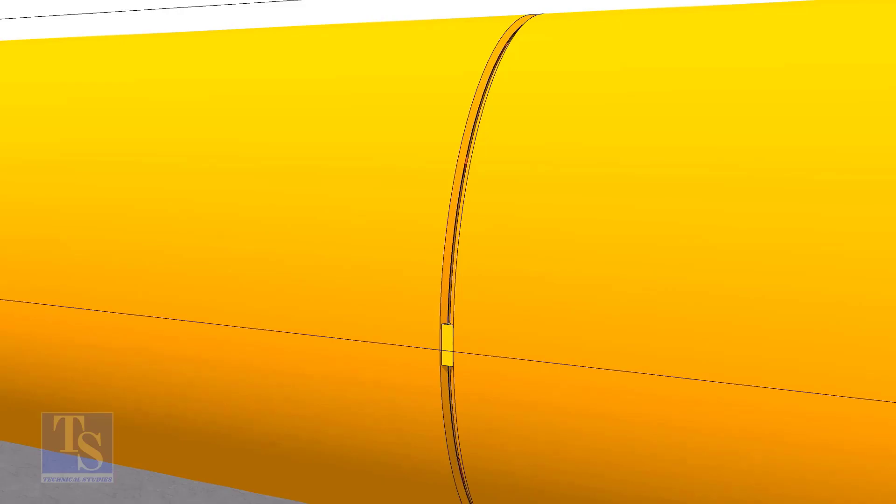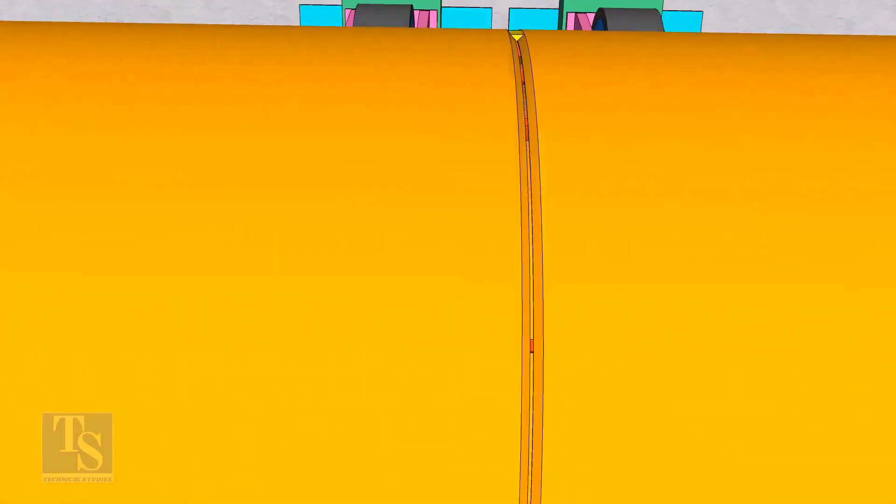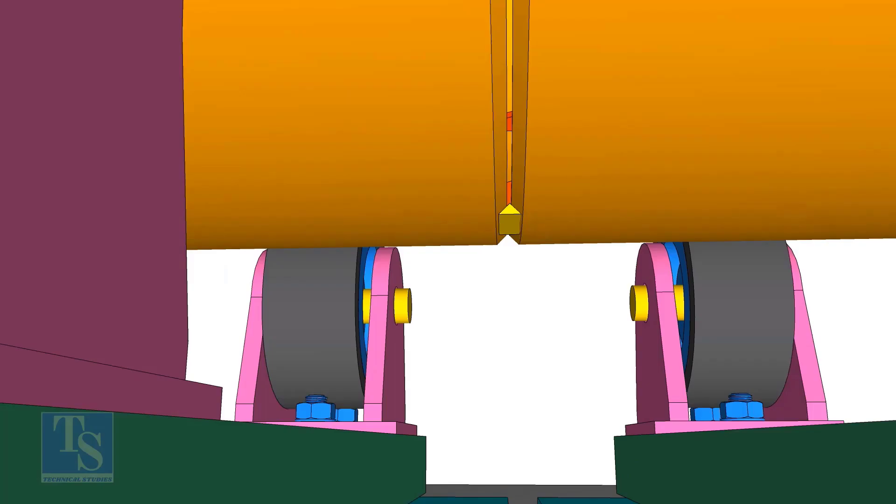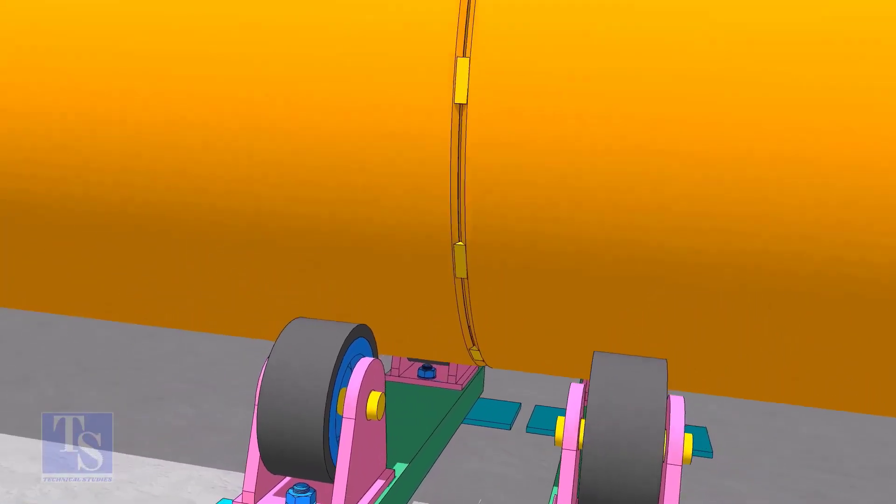If you TAC weld continuously starting from a point, the joint will come closer and at some point you will see there is no gap at all. TAC weld more tacks as required.